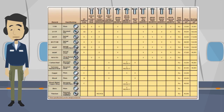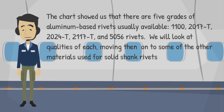The vast majority of solid shank rivets are made of aluminum or aluminum alloy of various compositions. It is important to know how to tell them apart by looking at the material they are made of, the markings on their head, and the AN material code. There are five grades of aluminum-based rivets usually available: 1100, 2017-T, 2024-T, 2117-T, and 5056 rivets.